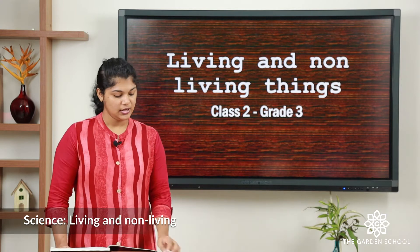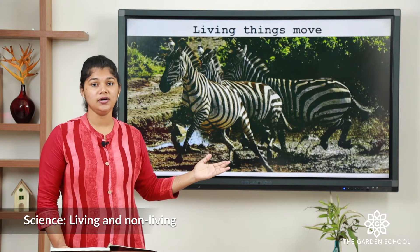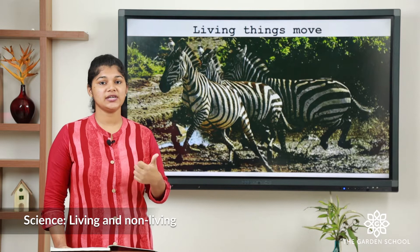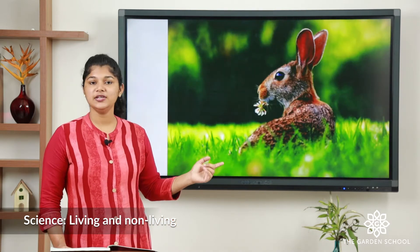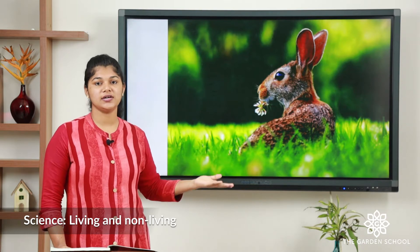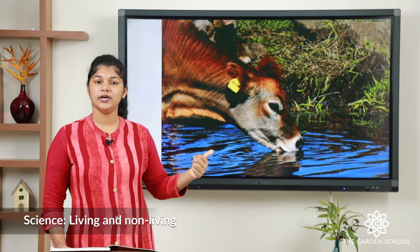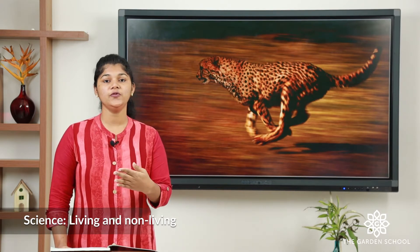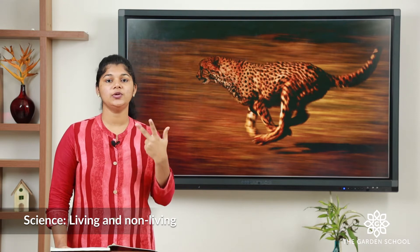The first one is: living things move. In this picture you can see the zebras are moving to escape from the enemies. In this picture you can see the hare that is in search of food. Here the cow is drinking water. You can see the cheetah is running to get the prey. Living things move from one place to another in search of food, for drinking water, and to escape from enemies.